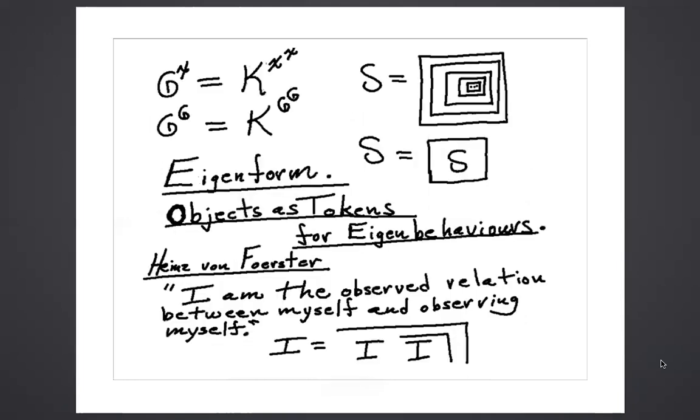Going back to this, you see that we are talking about eigenform, a familiar topic in cybernetics. Fixed points of transformations. Fixed points of transformations arise in the reflective domain, just as the king gives rise to Alice. And objects are tokens for eigenbehaviors. Objects become the eigenforms, and the behavior that gives rise to those eigenforms gives rise to the objects in the eyes of the observer.